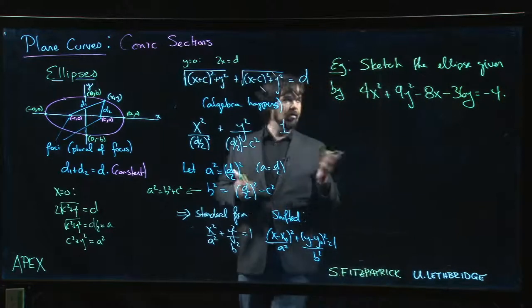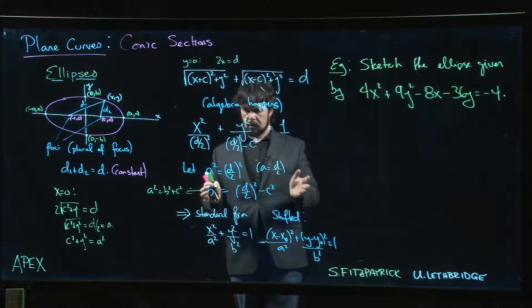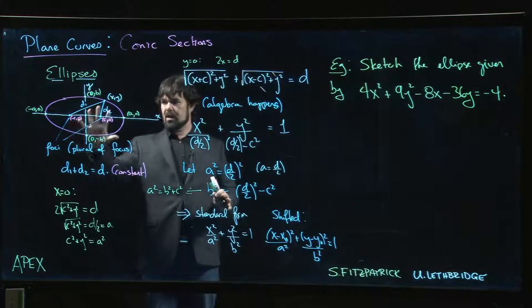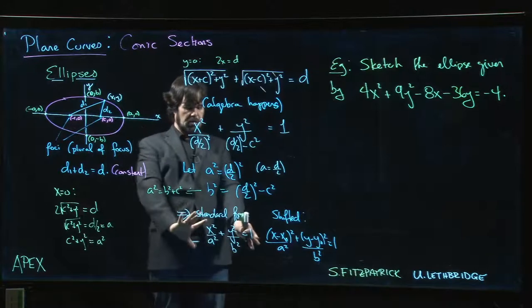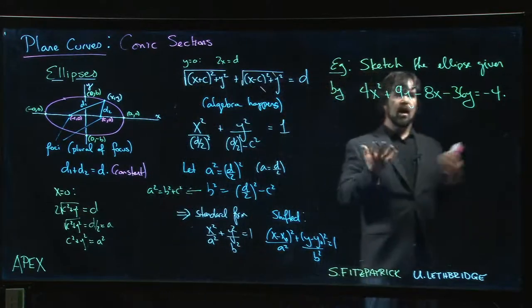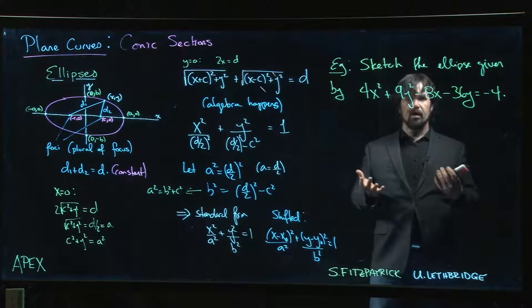So in the last example we were given the sketch of an ellipse and we tried to come up with the equation based on what we did at the beginning, getting from this general picture over to the standard form for the equation of an ellipse. Now we're given an equation and we want to get the graph.